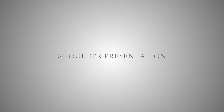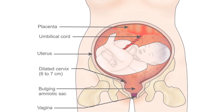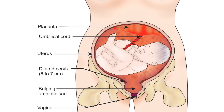Shoulder Presentation: transverse lie is an abnormal fetal presentation in which the fetus lies transversely with the shoulders presenting in the lower pole of the uterus. In this presentation, the long axis of the fetus is perpendicular to the maternal spine. As a result, the presenting part becomes the fetal shoulder, and the denominator is the fetal scapula.